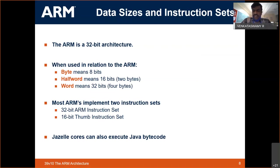How does the Thumb instruction set work? A 32-bit instruction is broken into two 16-bit instructions. This happens at the compilation stage. When you write a C program, you have the option to compile to the 32-bit ARM instruction set or to the 16-bit Thumb instruction set. In the compilation process itself, the program will be optimized and mapped to the corresponding instruction set.